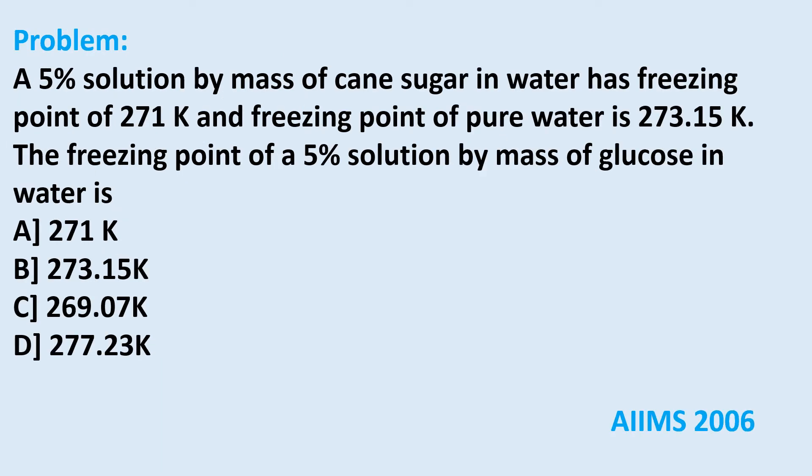A 5% solution by mass of cane sugar in water has a freezing point of 271 Kelvin, and the freezing point of pure water is 273.15 Kelvin. The freezing point of a 5% solution by mass of glucose in water is: A. 271 K, B. 273.15 K, C. 269.07 K, D. 277.23 K.